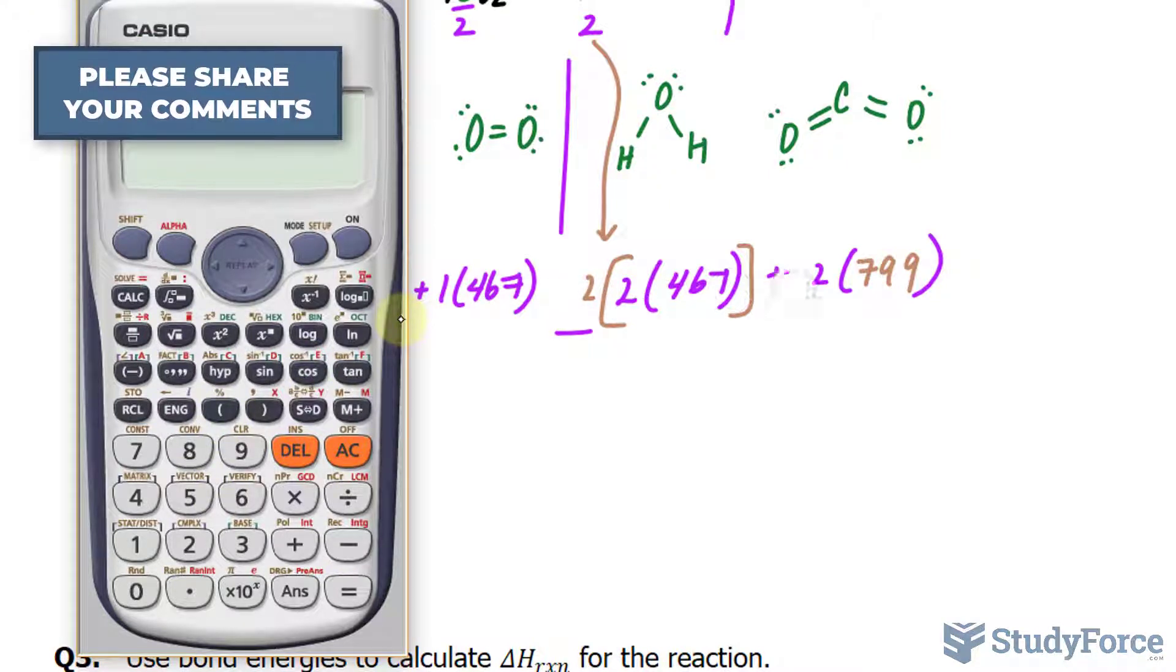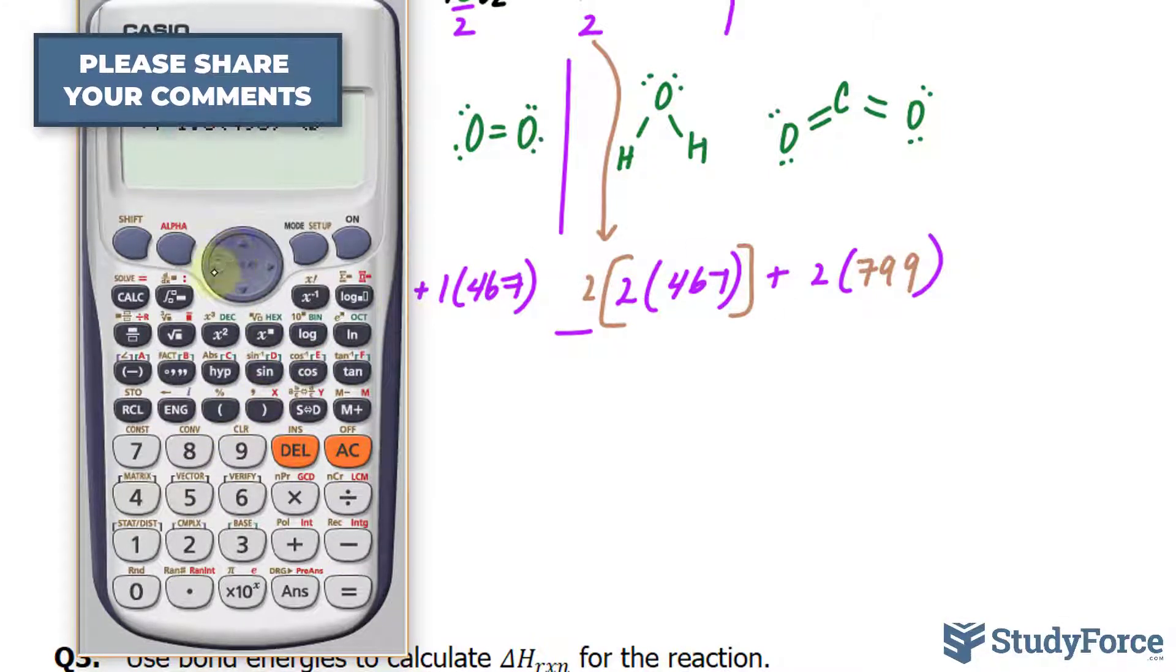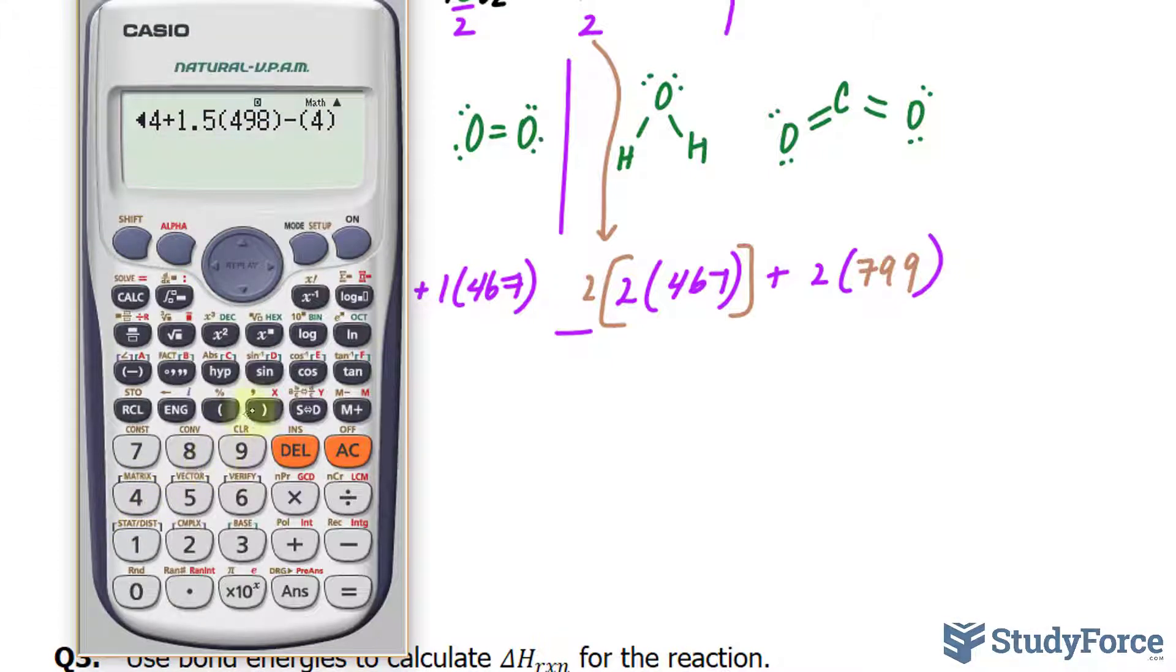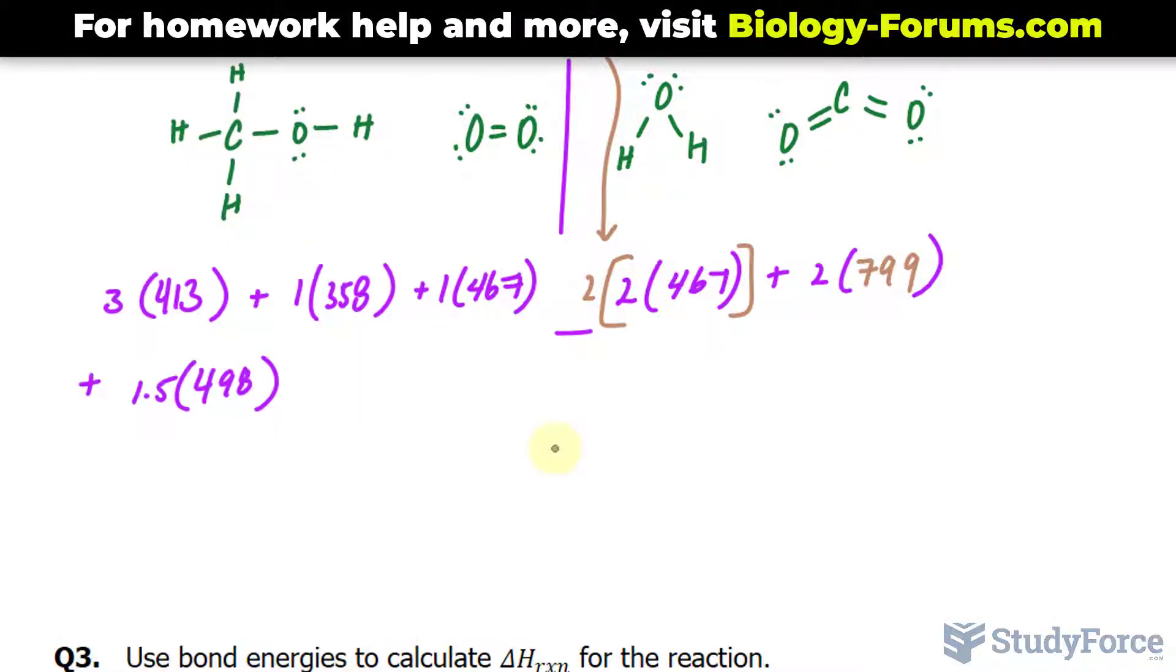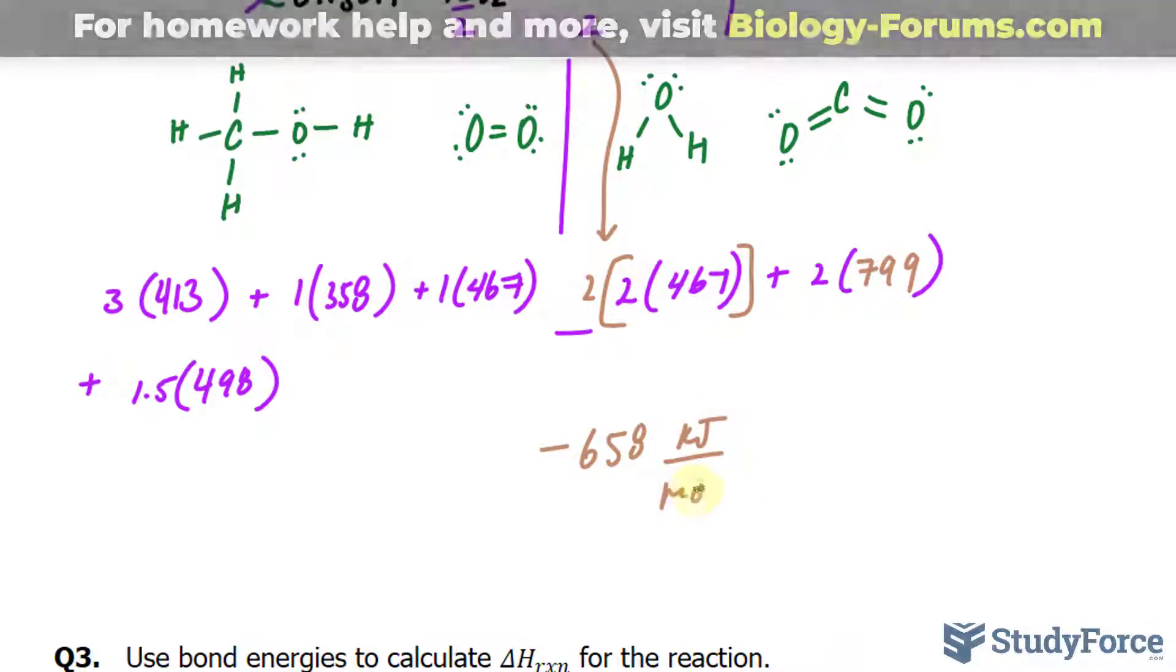Notice that I'm putting all of these numbers in brackets, open and close, 4 times 467, 2 times 2, plus 2 times 799. You should end up with a number, negative 658, negative 658 kilojoules per mole.